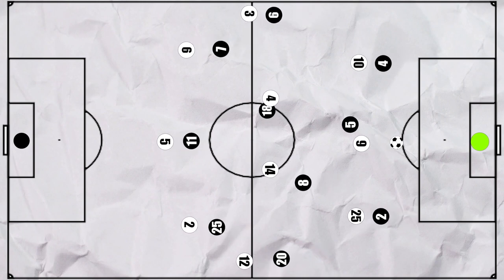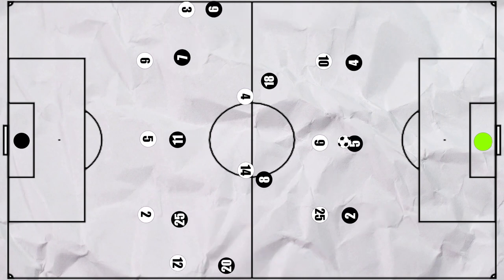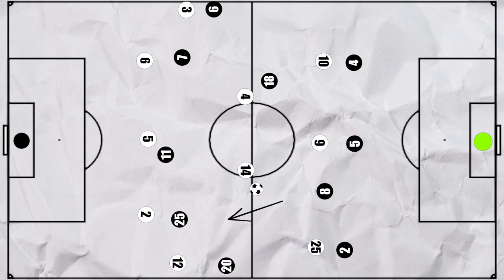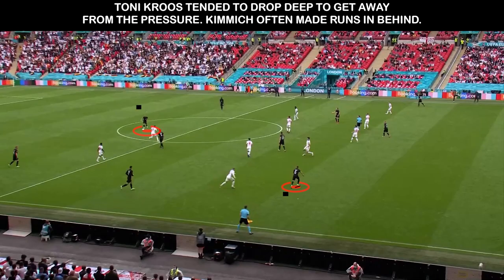Generally, higher up the pitch, England were much more high-pressing than Germany. To get away from the pressure, Kroos could often drop into the backline, with Ginter then advancing higher. When Kroos got his head up with time away from the pressure, he would look to go long into the space — as Pickford is less of a sweeper keeper — and Kimmich and Werner in particular were consistently making runs in behind.